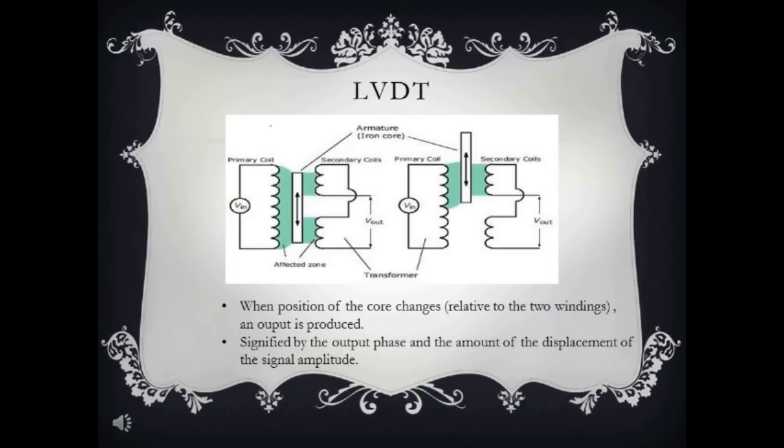For God's sakes, man! Do you want me to shoot your ass up? Shut up! Right. Let's continue. And this is how it works. When the position of the core changes relative to the two windings an output is produced. Easy as that. And the movement of the core is signified by the output phase and the amount of displacement of the signal amplitude.